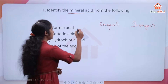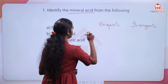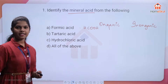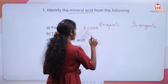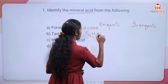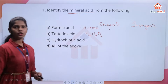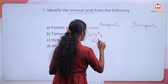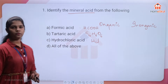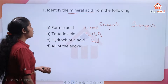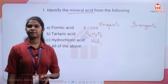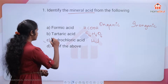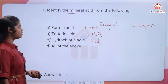Formic acid is HCOH, tartaric acid is C4H6O6, and hydrochloric acid — you all know it is HCl. The fourth option is 'all of the above.' The correct answer is option C, hydrochloric acid, because it is the inorganic (mineral) acid among the choices.